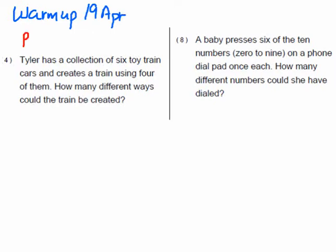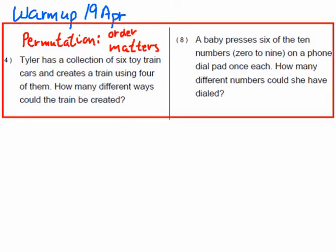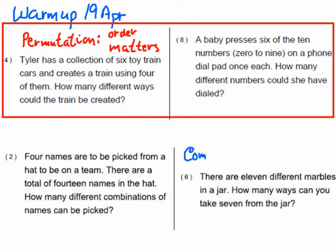Let's do this warm-up — today's April 19th. Let's do these permutations. Remember that a permutation is an ordered arrangement of objects that you select from a larger group of objects. It's an ordered arrangement and you're not allowed to take something out and throw it back in — so it's an ordered arrangement of objects without replacement.